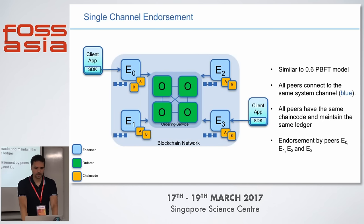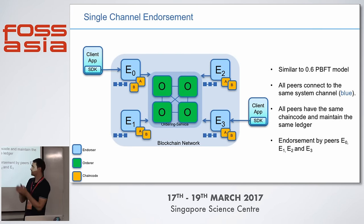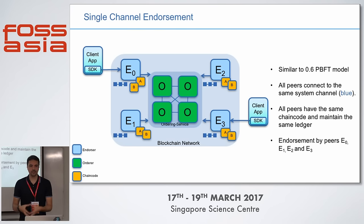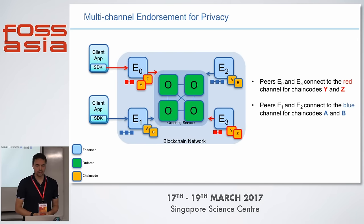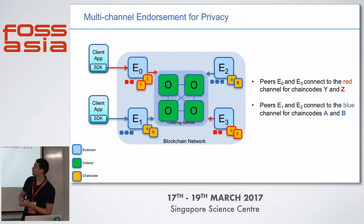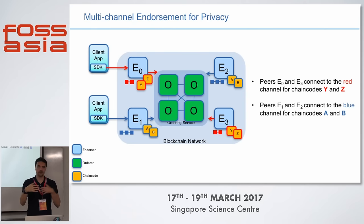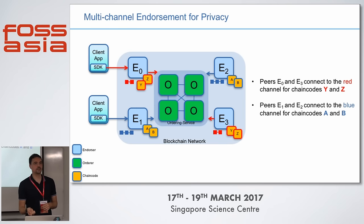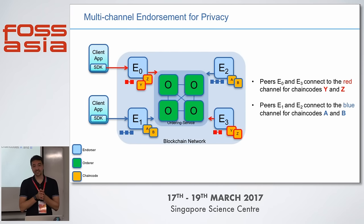In the new version, we can create the same architecture as in version 0.6 — just one channel where all peers execute the same chain codes. In a multi-channel network, the picture is different: we've got endorsement peers 0 and 3 on the red channel and peers 2 and 1 on the blue channel, and they will never intersect. At the same time, they can use the same ordering service. As long as the ordering service doesn't see the transaction content itself, it doesn't compromise privacy. So we can reuse the same ordering service for different channels without compromising privacy.